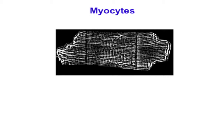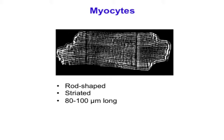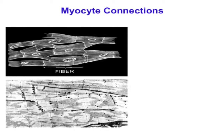Structurally, cardiac myocytes—also called myofibers as they are in skeletal muscle—are not fibers. They're rod-shaped, striated cells, but they're only 80 to 100 micrometers long and perhaps 20 micrometers in diameter. So they're really not a fiber by any usual definition of the term, but they are called myofibers because of the terminology deriving from skeletal muscle.